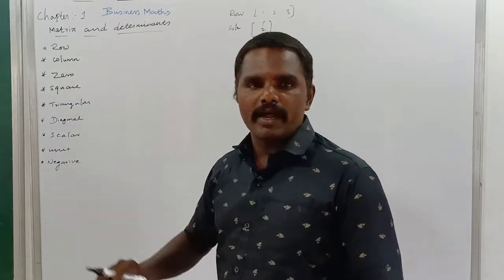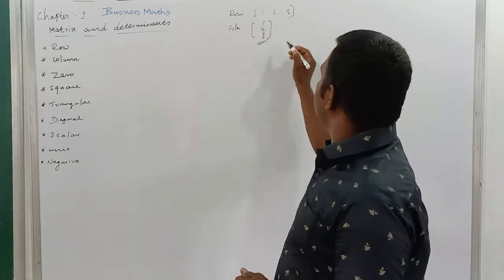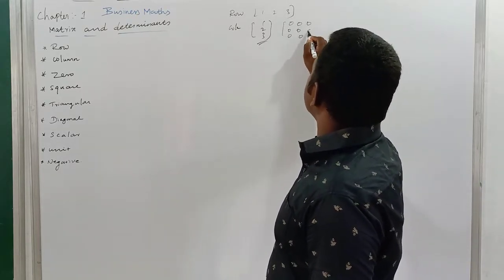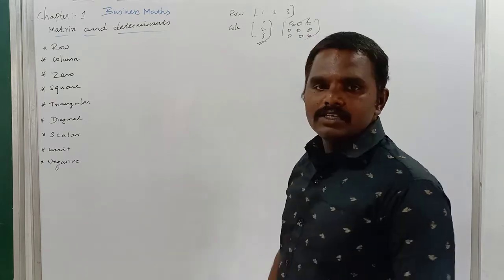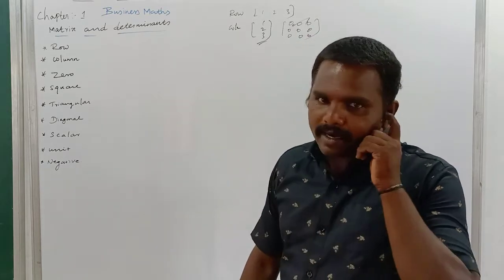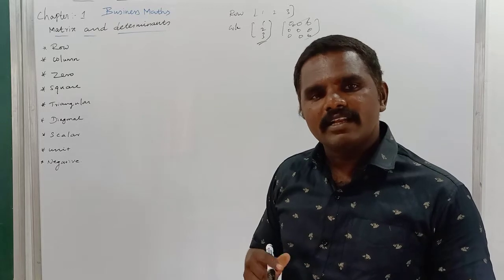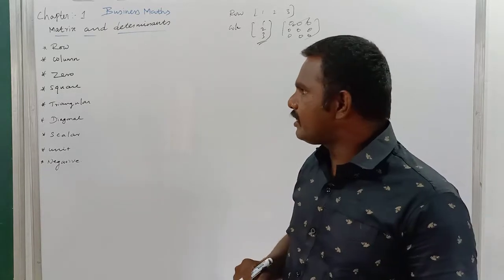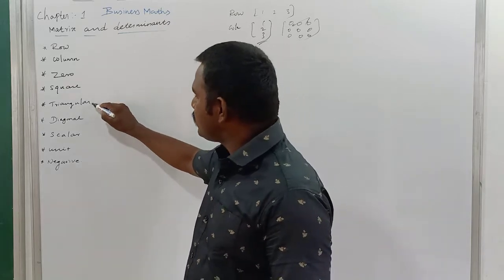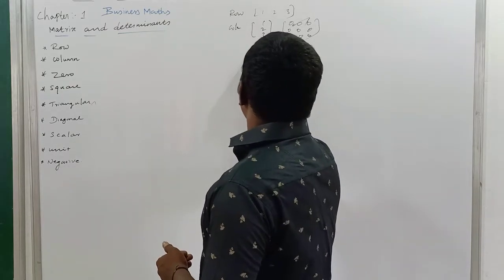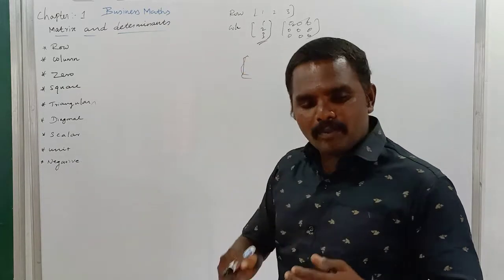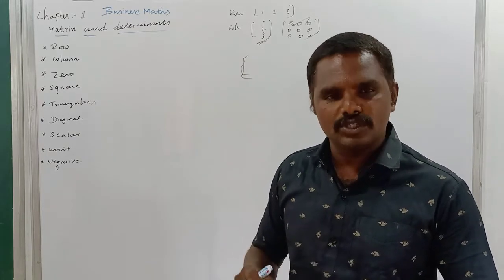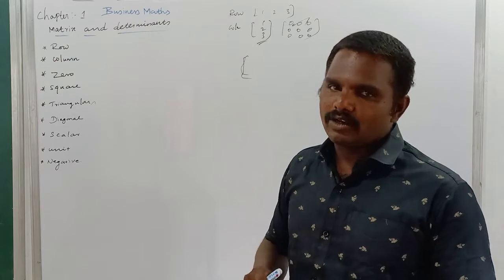Now I want to introduce the zero matrix. Zero matrix means all the entries are zero — that is called a zero matrix. Next is the square matrix. Square matrix means the number of rows and columns are equal — that is called a square matrix. Triangular matrix means the entries above or below the main leading diagonal are zero.